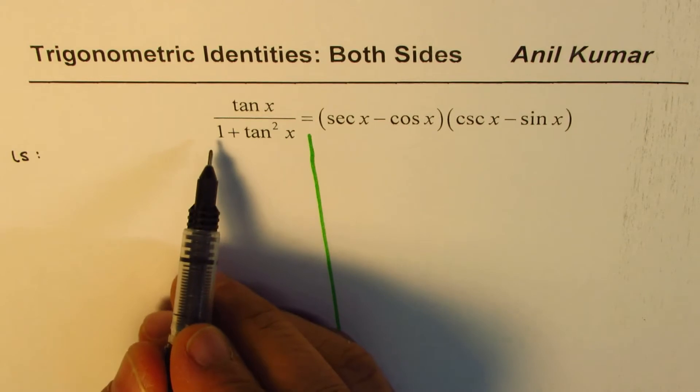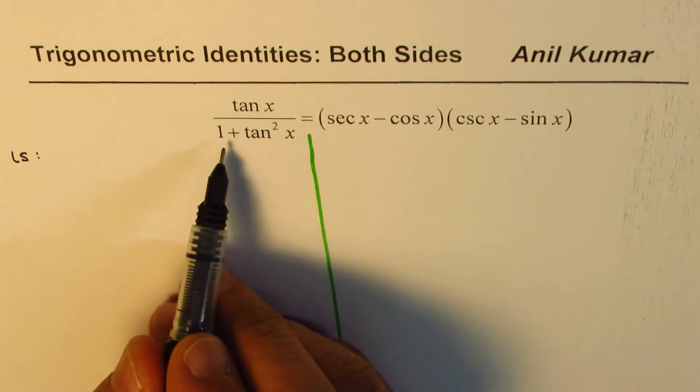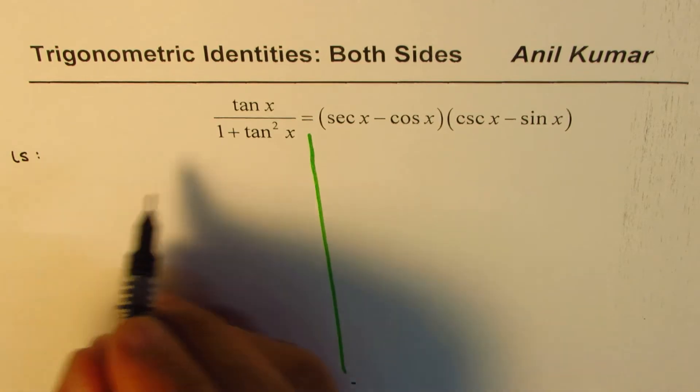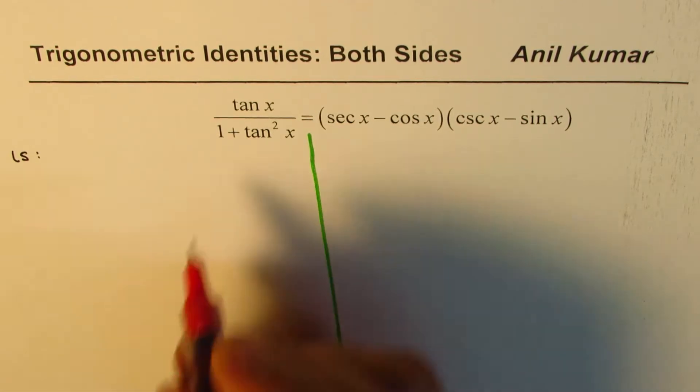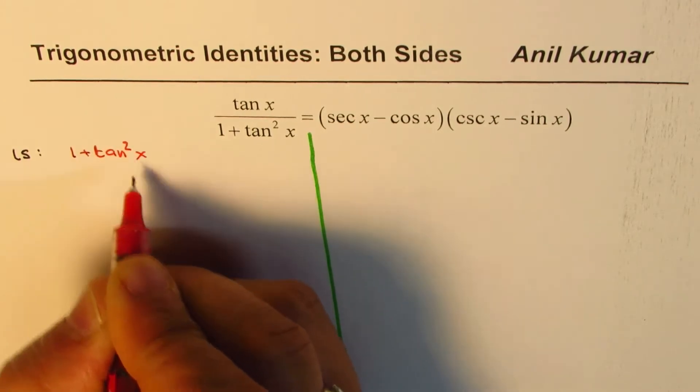Now we could write 1 plus tan square x as secant square x. Let me talk about this: 1 plus tan square x is actually secant square x, so we'll replace this 1 plus tan square x by secant square x.